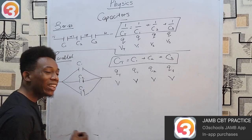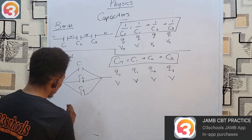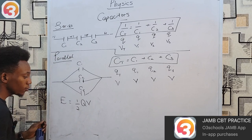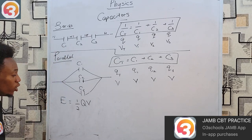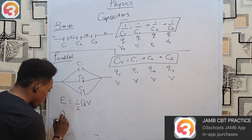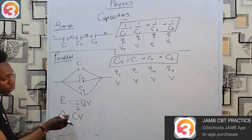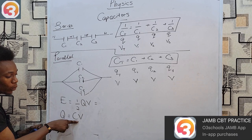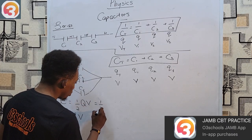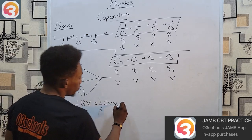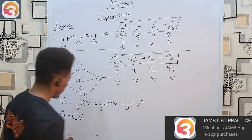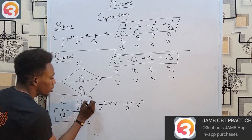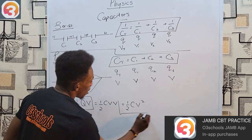The last thing to cover before past questions is the energy stored in a capacitor. The energy is given as E = ½QV. Note that the charge in a capacitor is Q = CV. Substituting, we can replace Q with CV, so the energy becomes E = ½CV × V = ½CV².